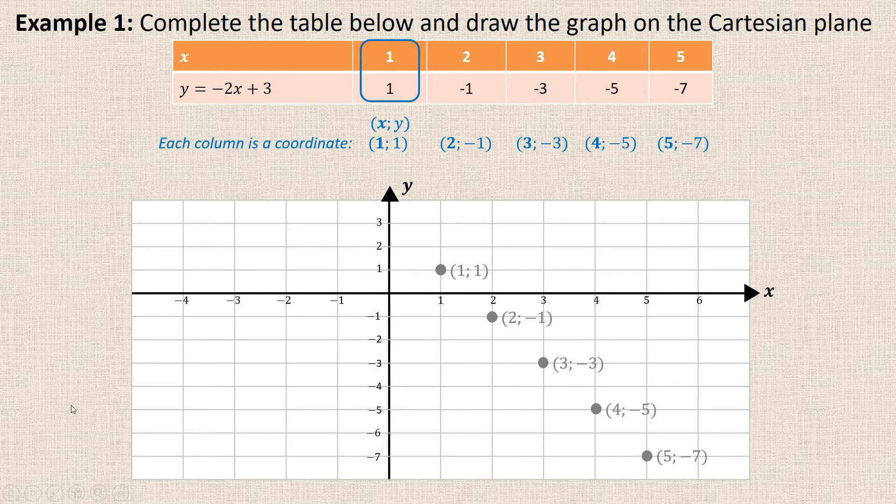Then what you would do because they want you to draw a graph, you would need to join all of those points. You shouldn't just leave it like this. So you draw the graph and then you label the graph. You label it according to its general rule, that's the graph formula. So the general rule is the same as the graph's label: y equals negative 2x plus 3.